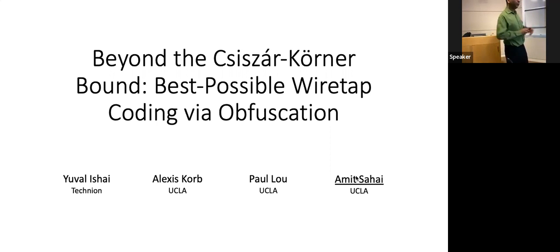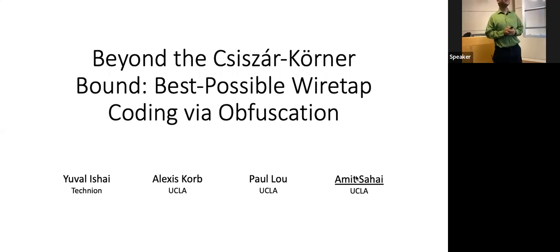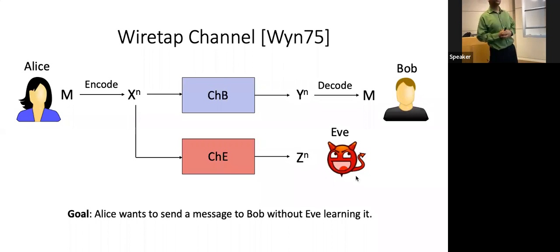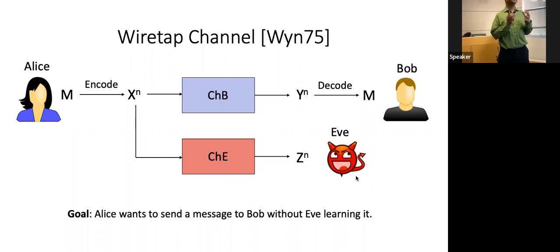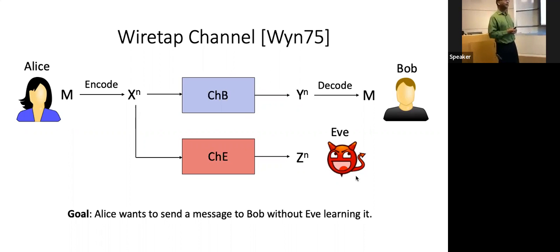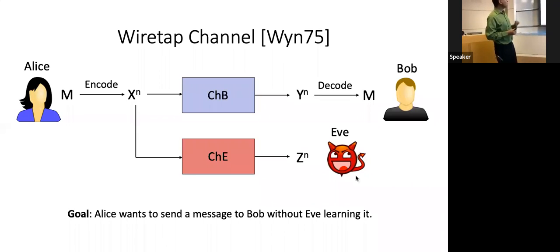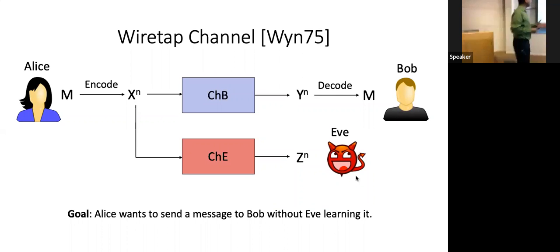Before I get into the crypto aspect, let's recall the basic information theory setup. Back in 1975, Wiener introduced one of the simplest and really beautiful settings for cryptography — a setting where Alice wants to communicate in a private way with Bob. She has a channel, let's call it Bob's channel, that she can use to communicate with Bob. Unfortunately, whenever she communicates over that channel, it also gets sent to Eve — the eavesdropper — over a different channel, Eve's channel.